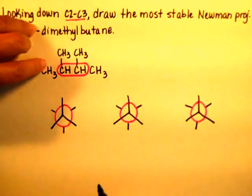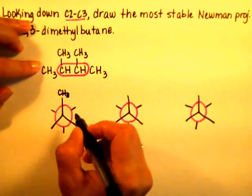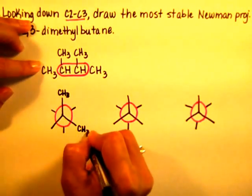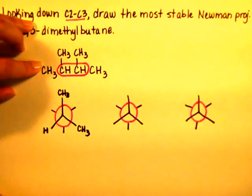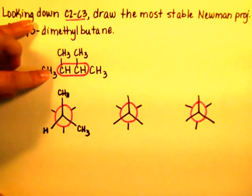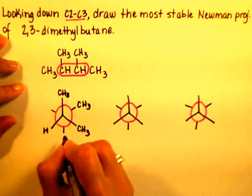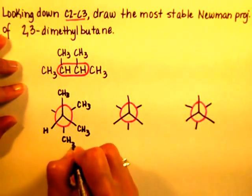Alright, the front carbon has 2 methyls and a hydrogen attached to it. Right now, don't worry about where you put them, just put them in the front carbon. The back carbon also has 2 methyls and a hydrogen attached to it. Do not obsess as to where to put them right now, just write them.